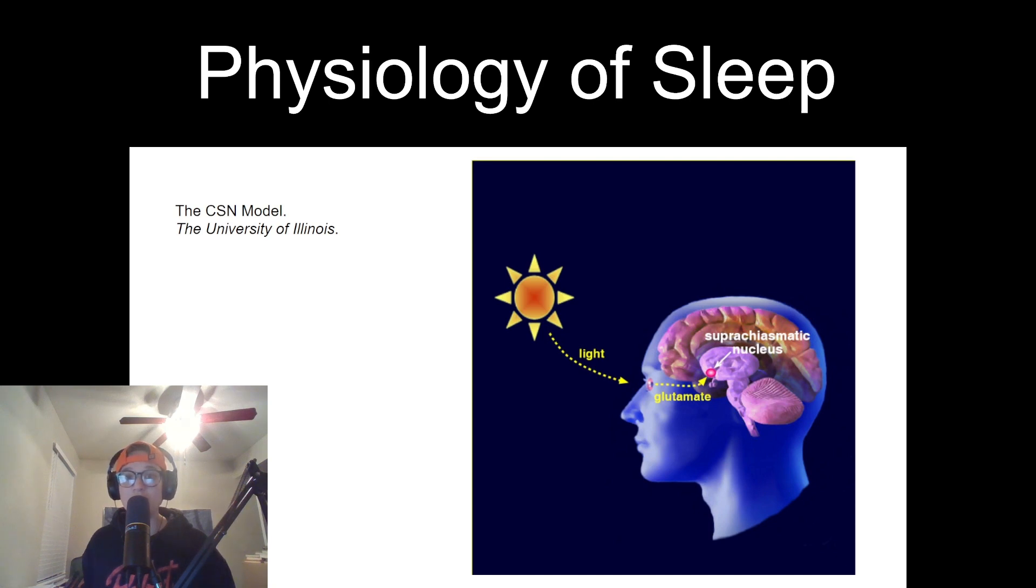During non-REM sleep, the brain shows slow, synchronized delta waves, reflecting the deep restorative state of slumber. In contrast, REM sleep is characterized by fast, desynchronized brain waves, similar to those observed during wakefulness.